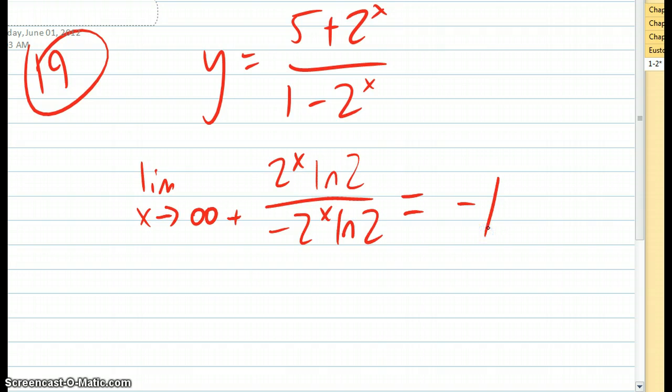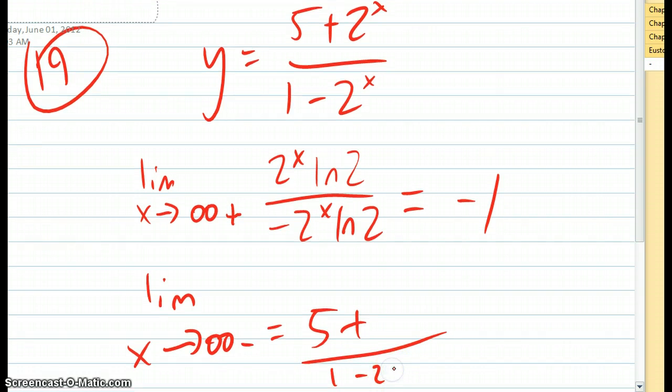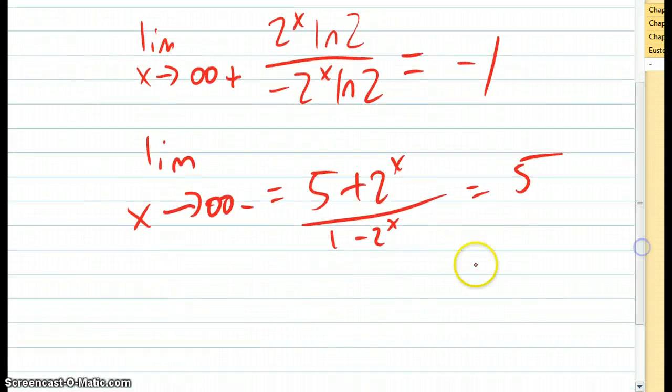Now to find the limit as x approaches infinity from the negative, or negative infinity, or whatever. No, that's positive infinity. So let's find the limit as x plus x, which equals 5. So the answer is e. Yay!